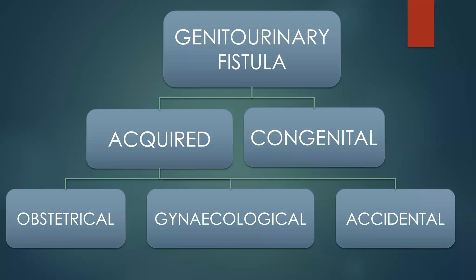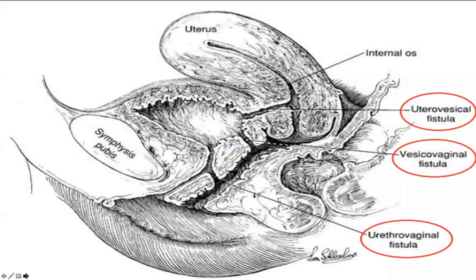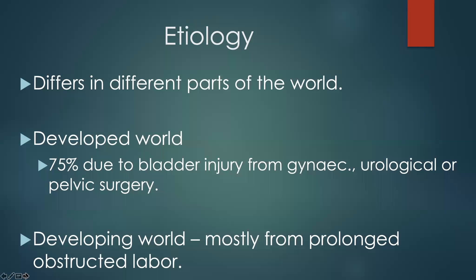Genitourinary fistulas can be classified into two groups: acquired and congenital. What we talk about is acquired fistula, which can be obstetric, gynecological, traumatic, or accidental. The common fistulas are urethrovaginal fistula, vesicovaginal fistula, and vesico-uterine fistula. Etiology differs in different parts of the world. In the developed world, the most common etiology is from gynecological or urological pelvic surgeries, whereas in the developing world, it is mostly from prolonged obstructed labor.